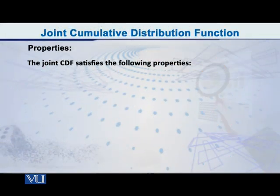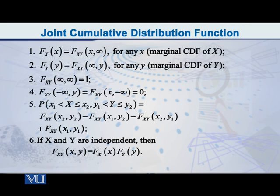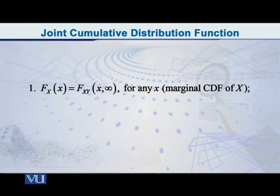Now let me give you the properties of this joint CDF. As you can see on the screen there are quite a number of properties of the joint CDF, but at this point in time I would like to focus on the first three. So the very first property reads as follows: capital F of the random variable X at the point small x is equal to capital F of the random vector XY at the point small x comma infinity.